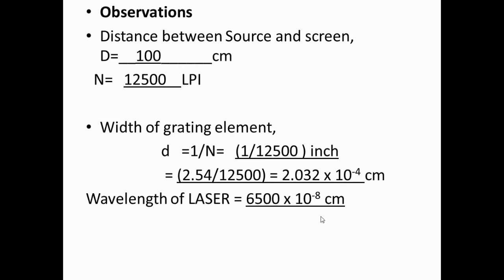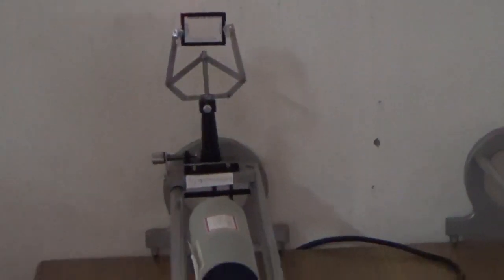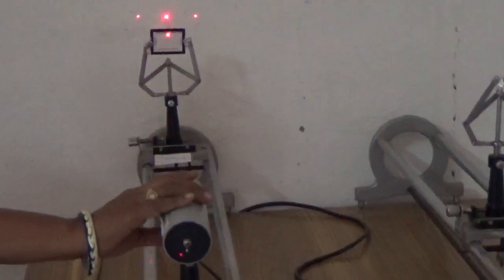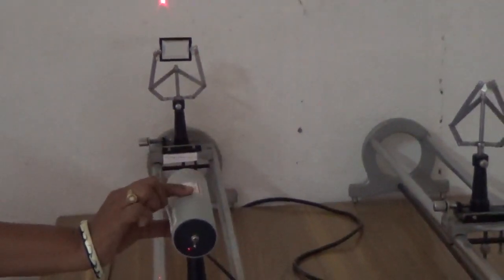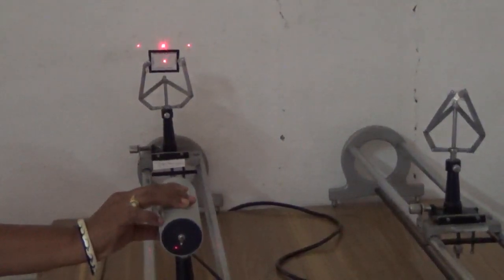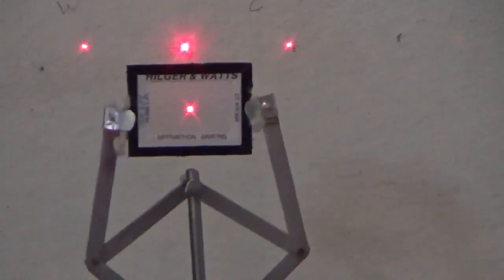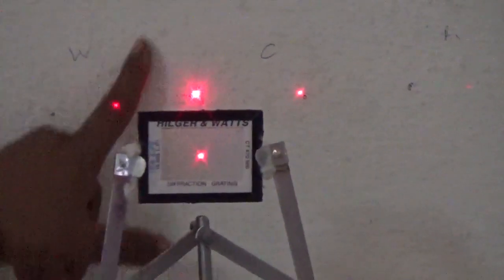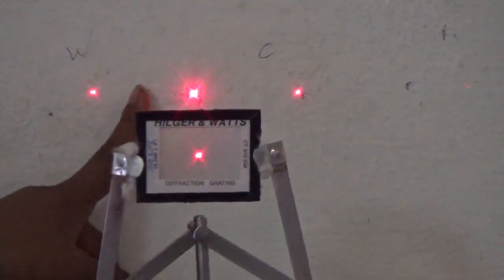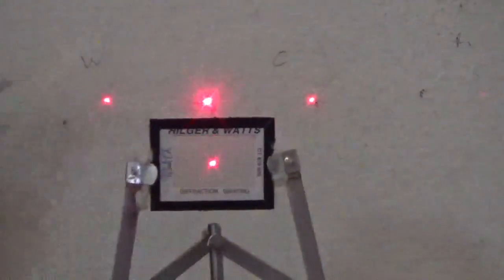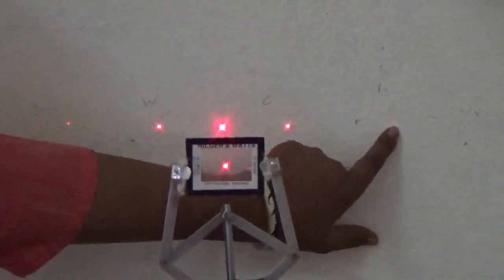For the procedure: first ensure the laser source and grating element are in the same line. When the laser beam is not falling on the grating, only one spot is seen on the screen. When it falls on the grating, different spots appear — this is the diffraction pattern. The central maxima is very bright compared to the other spots. On either side of the central maxima is minima (unaffected space), then first order maxima on either side, and then second order maxima.